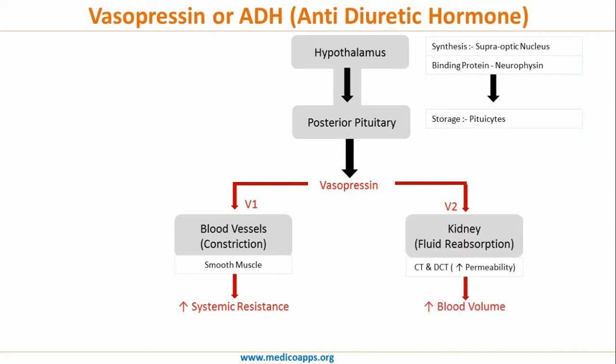V2 receptors are present on the kidney, where they lead to fluid reabsorption. This fluid reabsorption mainly happens at the collecting tubules and the distal convoluted tubule level. At both these levels there is an increase in permeability, which leads to fluid reabsorption. As a result, blood volume increases.